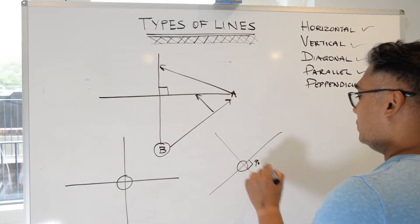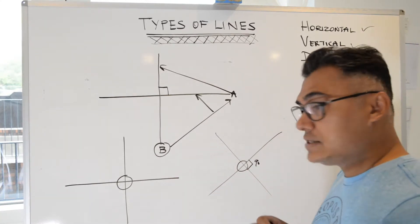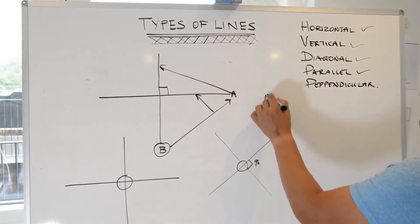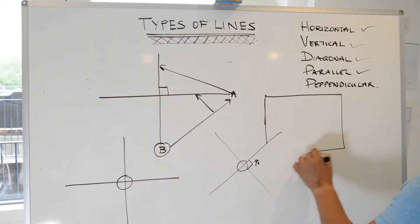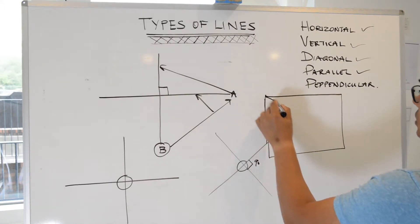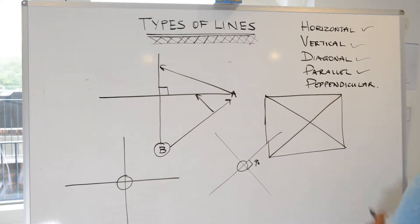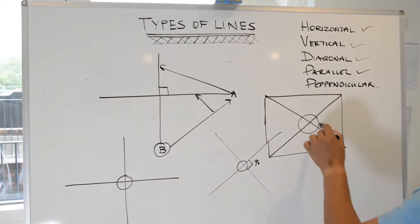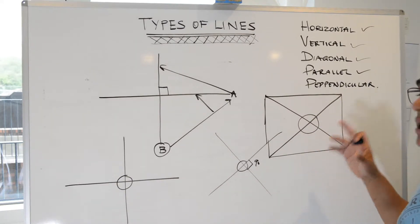Now, just to show another example: when we did the rectangle before, and I showed you the diagonal from one corner to the other corner, we did get two lines intersecting at that point. However, those are not perpendicular lines.